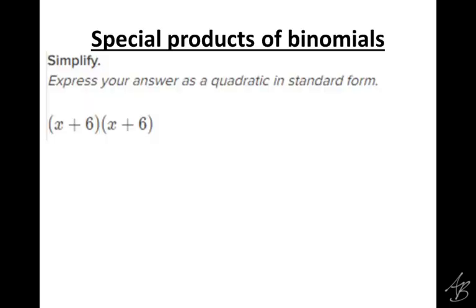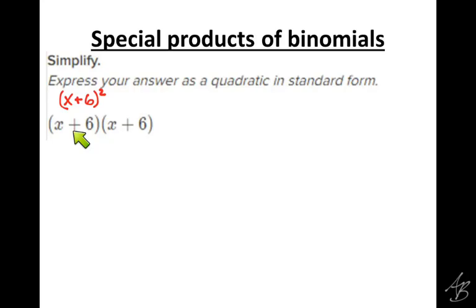There's another topic called special products of binomials, which is the same thing except with some different types of problems. One thing you might see is a problem that instead of saying x plus 6 times x plus 6, actually says x plus 6 squared. If you get something that looks like this, the square means we're multiplying x plus 6 times x plus 6 — multiplying it by itself. So you're going to have to know that x plus 6 squared means the same thing as x plus 6 times x plus 6, and rewrite the problem to look like that.